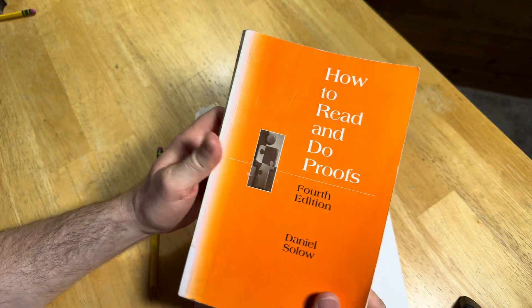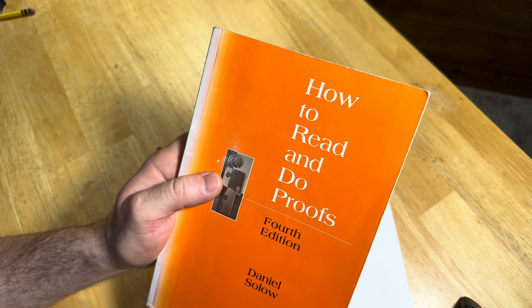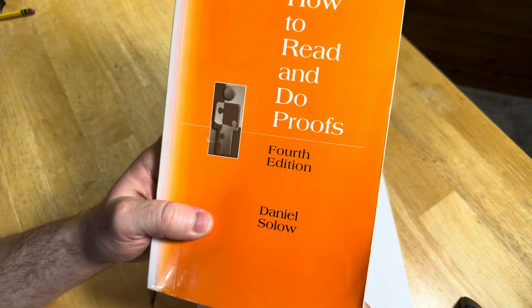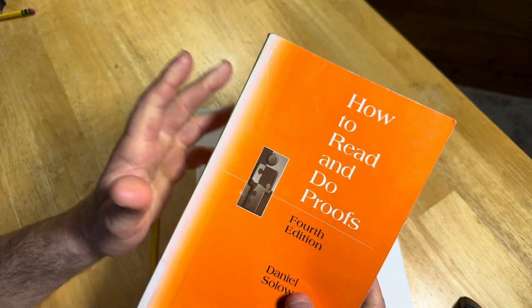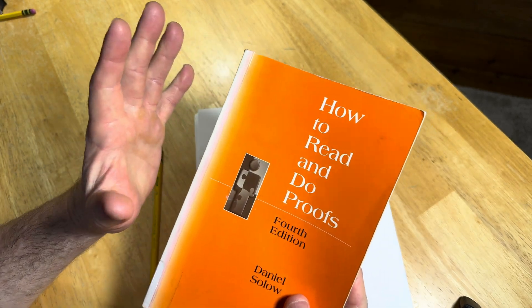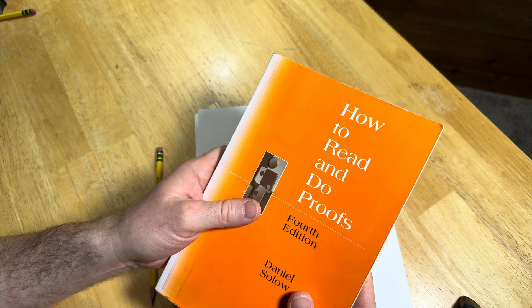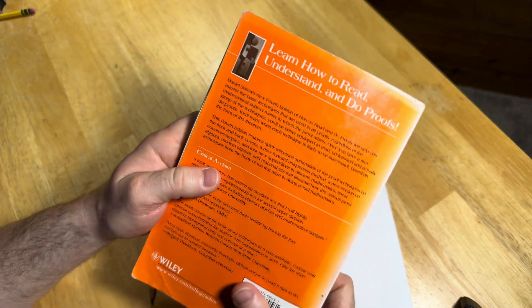In this video we are going to take a look at this excellent book. It is titled How to Read and Do Proofs and it was written by Daniel Solow. This is a book that is intended for beginners, so if you are a person who wants to learn how to write proofs, this is probably one of the best books that you can get.